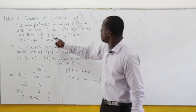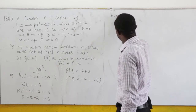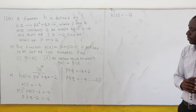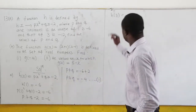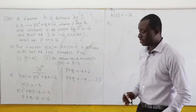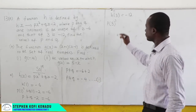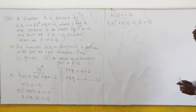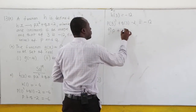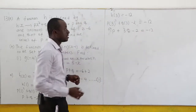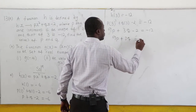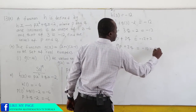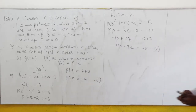Now the image of 3 is negative 12, so h(3) = -12. Wherever we see x in the function h we put 3 there. So we have p(3)² + q(3) - 2 = -12. Now 3 squared is 9, so we have 9p + 3q - 2 = -12, which gives us 9p + 3q = -10. Let's call this equation 2.